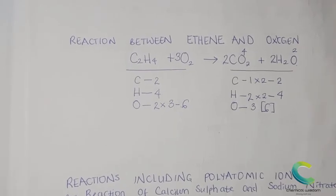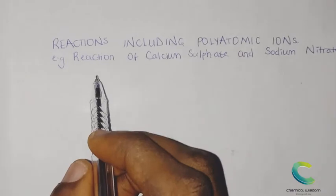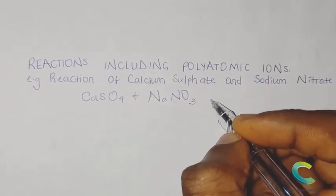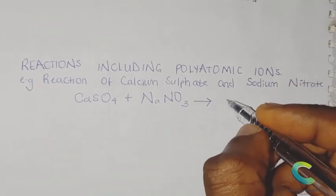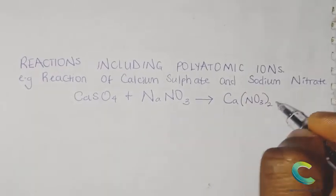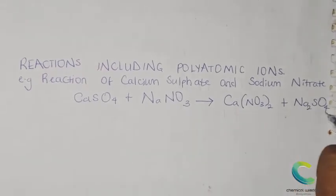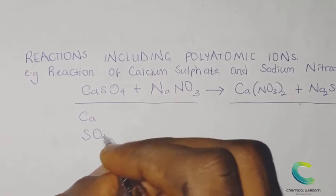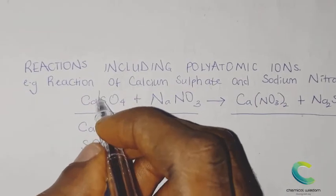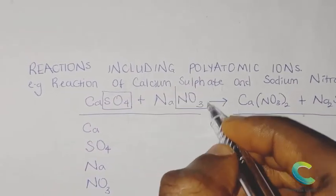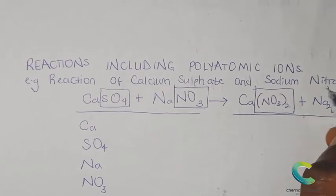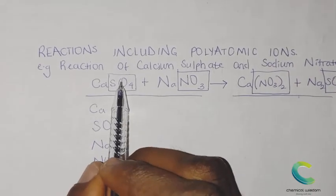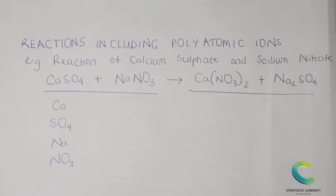Now let's look at something more complex — a reaction involving polyatomic ions. Consider the reaction between calcium sulfate and sodium nitrate, producing calcium nitrate and sodium sulfate. I need to treat each polyatomic ion as a single unit — do not split them. Sulfate and nitrate are polyatomic ions, meaning many atoms come together to form a single ion. Take each one as a single ion so you don't get confused.